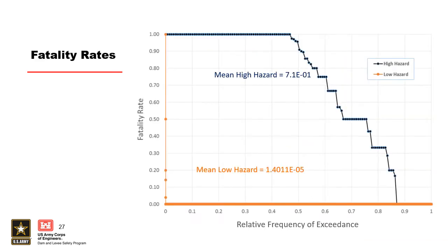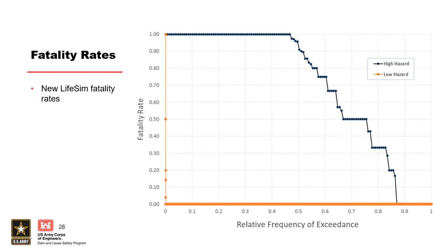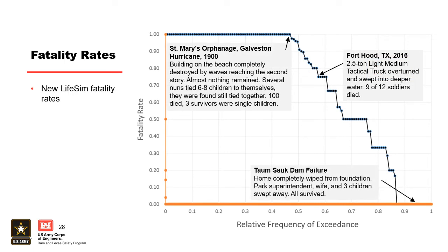We also talked about fatality rates — these are the fatality rates used explicitly in LifeSIM. Every dot on the function represents a group identified as being in a high or low hazard situation and the percentage of that group that lost their life. Looking at the high hazard function (the blue one), almost 50% of the groups identified as high hazard had 100% of their people lose their life. Sometimes people are stuck in a high hazard situation and no one loses their life — the Tom Socker case history to be discussed tomorrow is one example. Daryl Grigg and Dave Benson from Teton — the two fishermen — are at 50% fatality rate because Daryl Grigg survived miraculously.